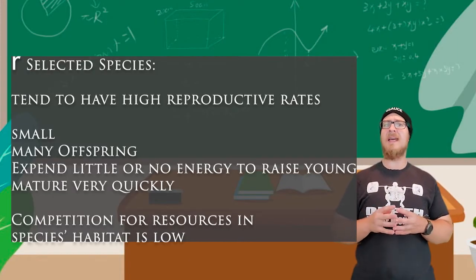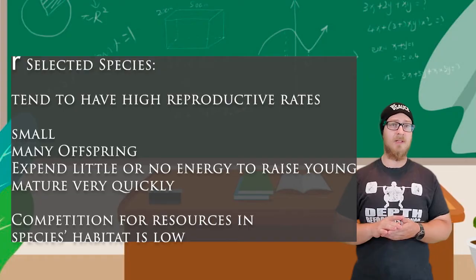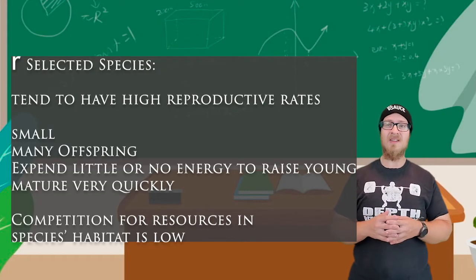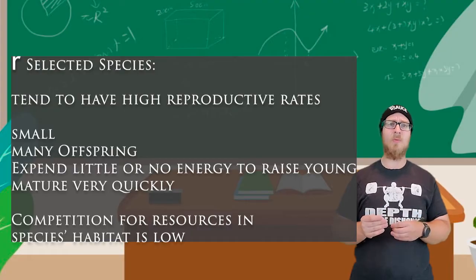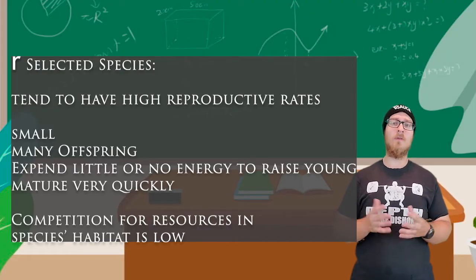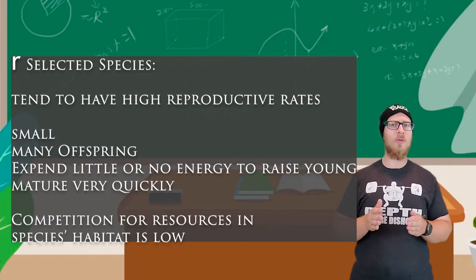R-selected species are species that tend to have very high reproductive rates. These organisms tend to be small. They expend minimal energy when raising their offspring, if any at all. They tend to mature very early and have shorter lifespans.